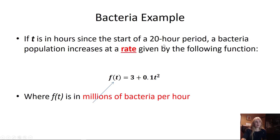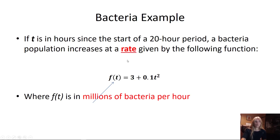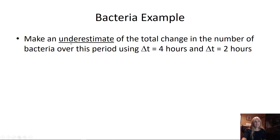If t is hours since the start of a 20-hour period, a bacteria population increases at a rate — and they're not going to give you the prime notation; they'll give you a lowercase f, but they will tell you it's a rate. So this is the derivative, where f(t) is in millions of bacteria per hour. Make an underestimate of the total change using Δt = 4 hours.